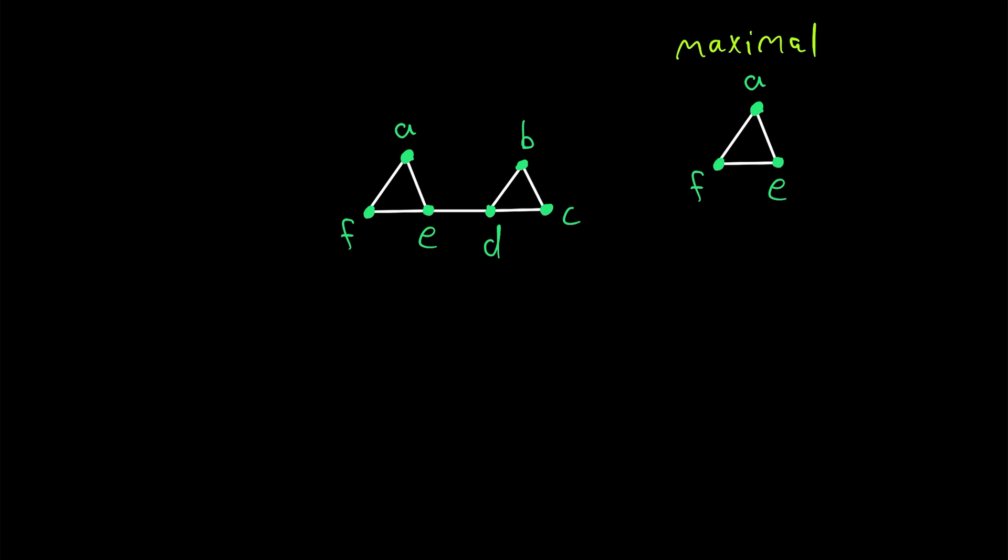Is there any other clique in the graph that has more vertices? That can be a very time-consuming thing to determine, but in this example, it's pretty straightforward. We just need to find all maximal cliques of the graph, and then whichever one has the most vertices, or whichever several cliques have the most vertices, those are our maximum cliques.